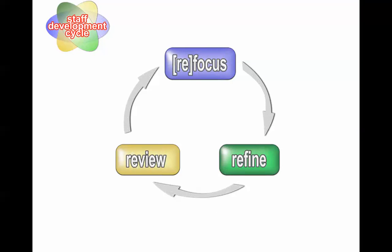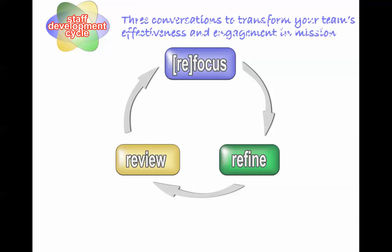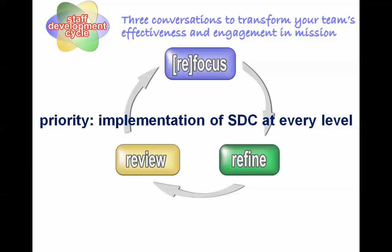The first is the Staff Development Cycle Toolkit, which ensures that all team leaders have at least three focused conversations with their team members every year to help transform team effectiveness and engagement in the mission. One of our LDHR priorities is the implementation of the Staff Development Cycle at every level of the organization.